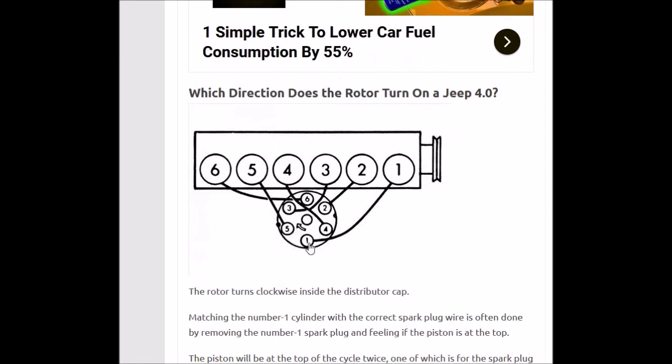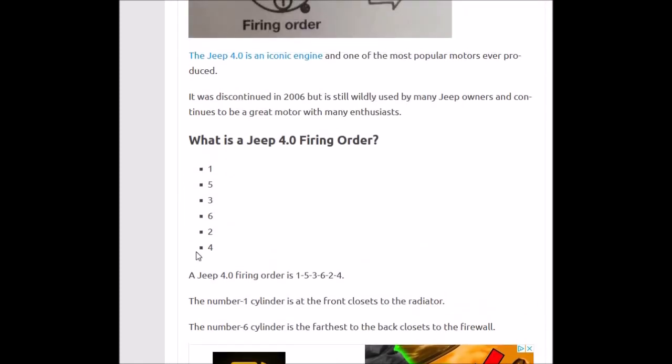And that's the way you would run your spark plugs. Number one goes to one, five would go to five, and so on, all the way around. So once again, the Jeep firing order is 153624.